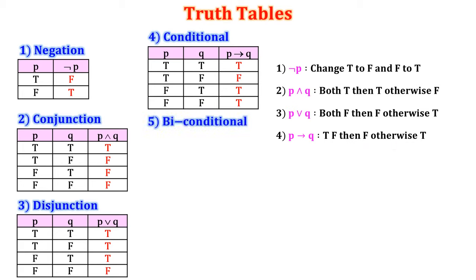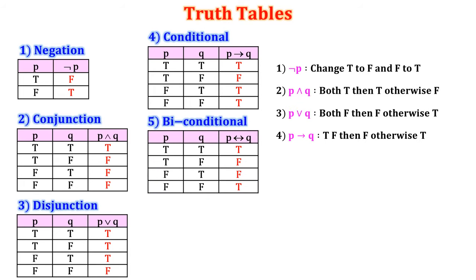5. Biconditional. Here also we have two statements P and Q and four possibilities. The biconditional is denoted as P if and only if Q, with a double-sided arrow mark. The condition is: if both are same then the answer is true, otherwise false. For example, TT gives true and FF gives true.